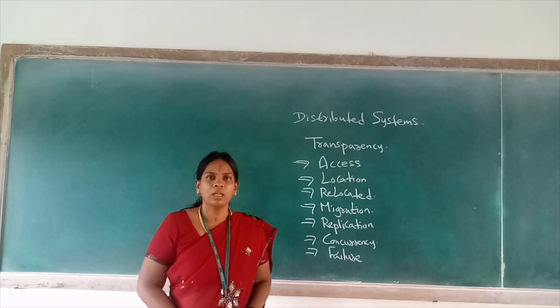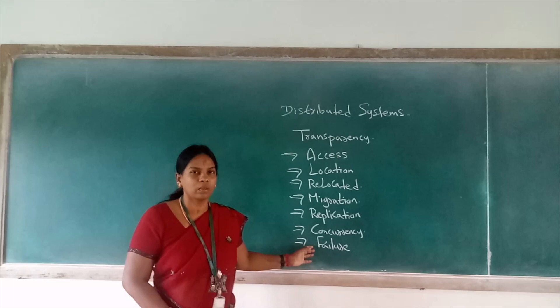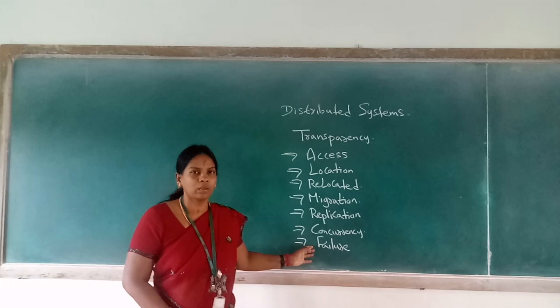Concurrency transparency is when multiple concurrent systems are going to access our distributed systems. And lastly we have failure transparency, which covers what object is going to fail and how the object is going to recover across the other networks and computers.